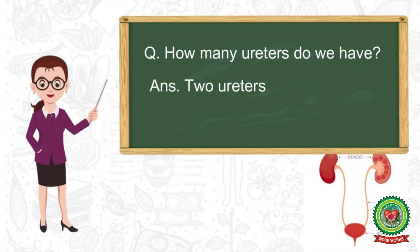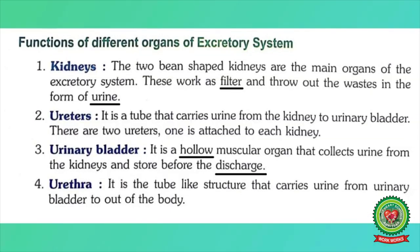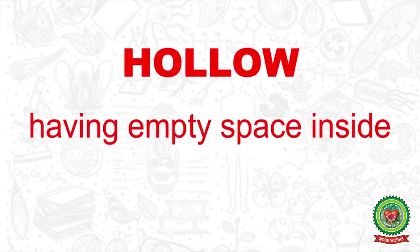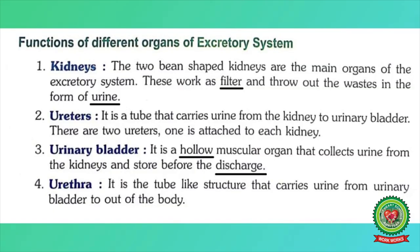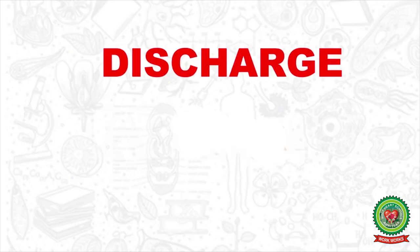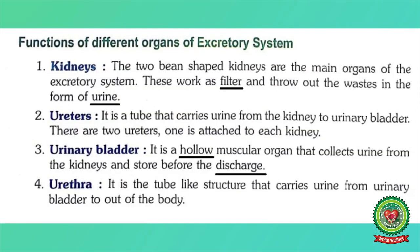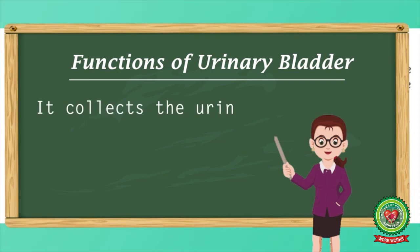One ureter is attached to one kidney only. The next excretory organ is the urinary bladder. It is a hollow muscular organ that collects urine from the kidney and stores it before discharge. Underline 'hollow' — meaning: having empty space inside. Underline 'discharge' — meaning: allow to flow out. The urinary bladder performs two functions: it collects urine and it stores urine.